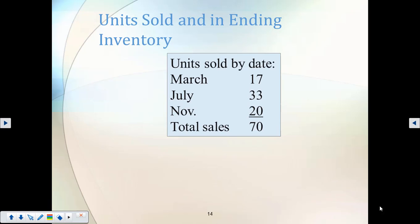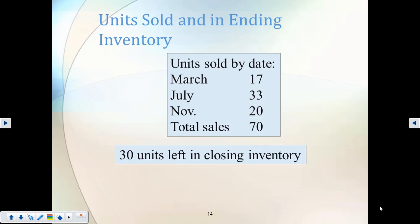In chapter six, you must be fluent in all three methods: FIFO, LIFO, and weighted average. The selling price of the product can also differ at different times, so you may need to calculate sales revenue separately, or if there's one price for all units sold, simply multiply the selling price by the number of units sold.